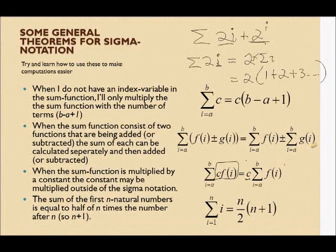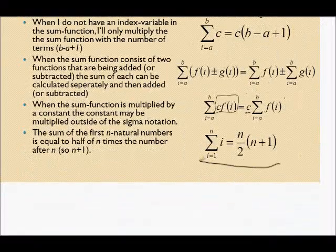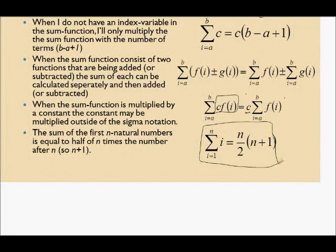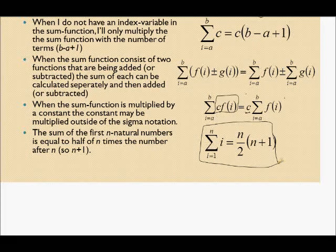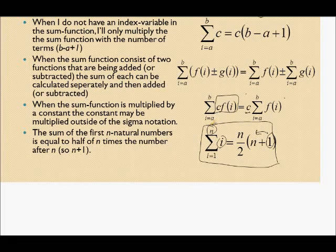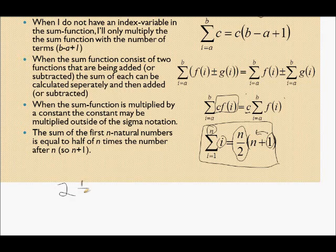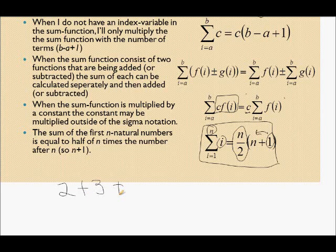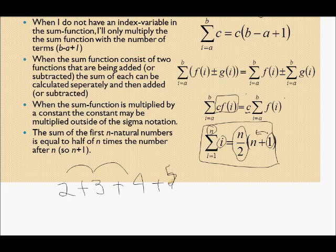And then finally, this is just a very useful formula that the sum of the first n natural numbers can be calculated by that formula. Basically, it's saying you take the first number, which is 1, when i is equal to 1, the first number is 1. You add it to the last number, which is obviously n. So take the first number, add it to the last number, and multiply it by half the number of terms. So if I start at 1, I'm going to have n terms. So half the number of terms.